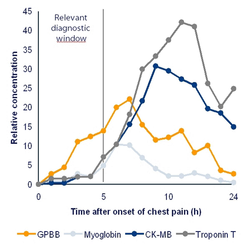In the fields of geology and astrobiology, a biomarker can be any kind of molecule indicating the existence, past or present, of living organisms. Biomarkers, versus geomarkers, are also known as biosignatures. The term biomarker is also used to describe biological involvement in the generation of petroleum.